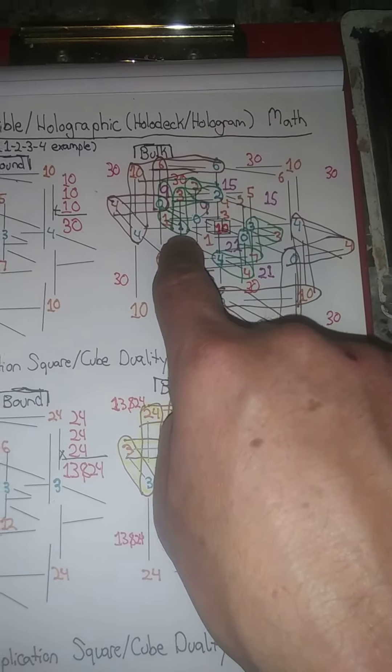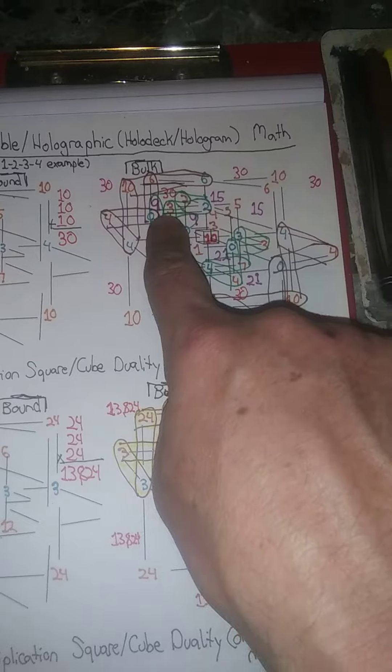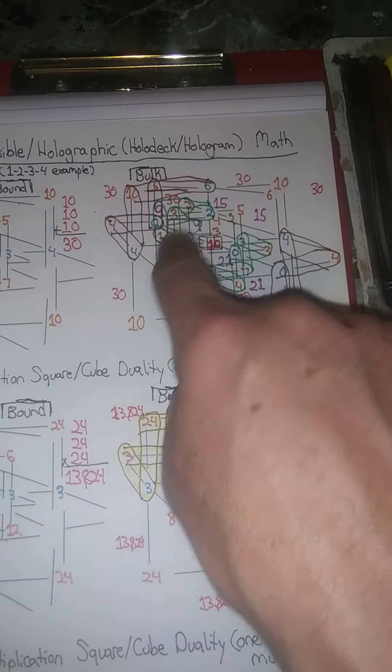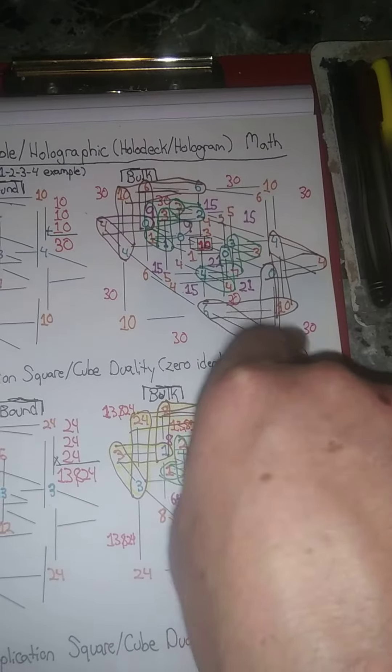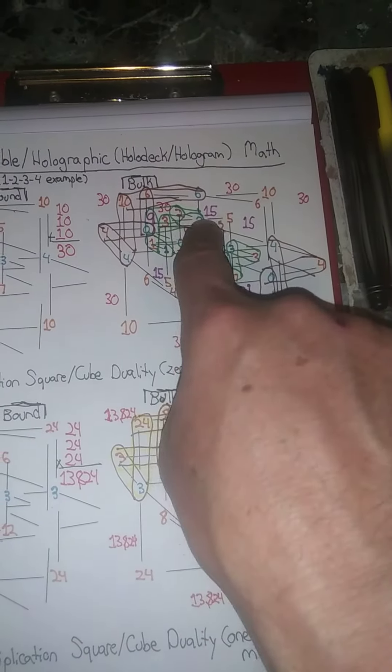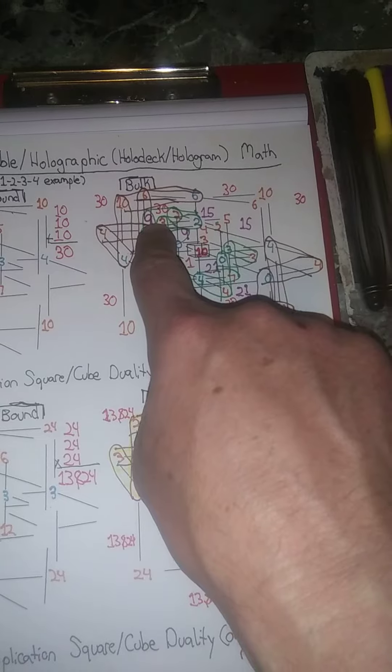The inner cubic sections—I sort of drew this wrong, I circled the nine, I shouldn't have. Nine and 21 equals 30 on both sides. These inner cubic numbers give the inner hollow deck numbers.